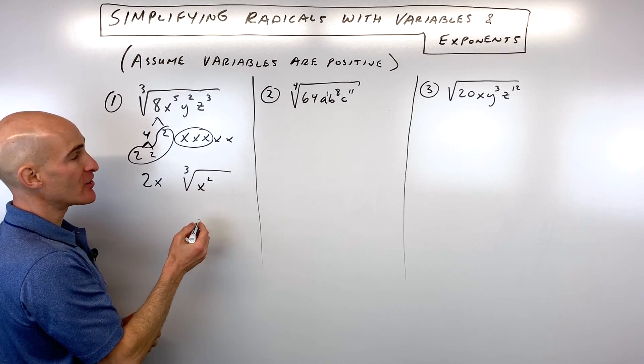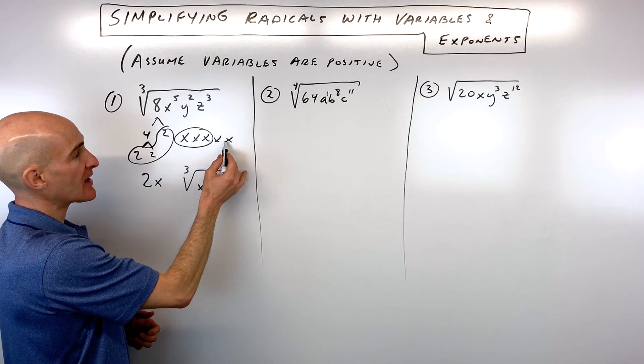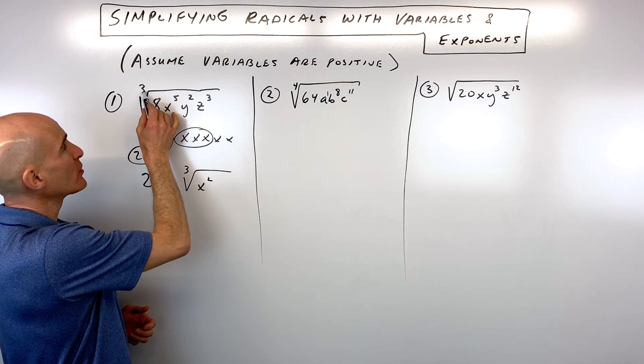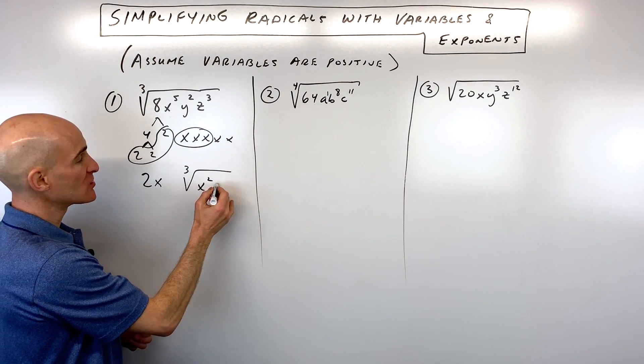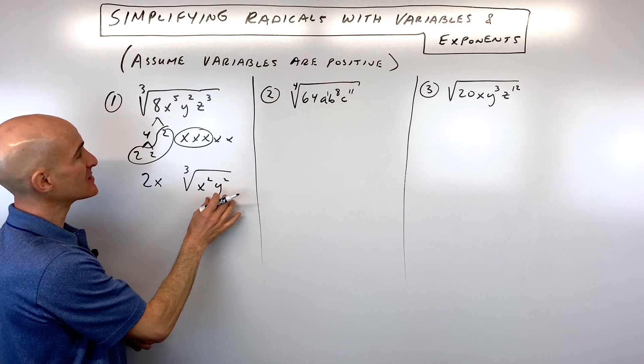We've got 2 left over. That's going to stay underneath the radical here. X times x is x squared. Here we're looking for groups of 3 with the y's, but you can see we only have 2 y's. So we don't have enough to make a group of 3. That stays underneath the radical.